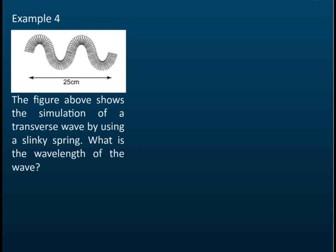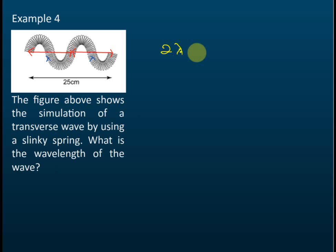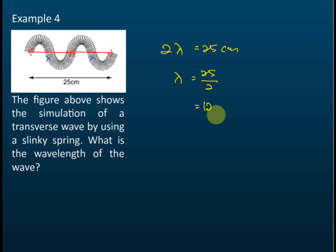This is a transverse wave. What is the wavelength? From here to here is one wavelength (λ), and from here to here is another λ. So we have two wavelengths: 2λ = 25 cm, therefore λ = 25 ÷ 2 = 12.5 cm.